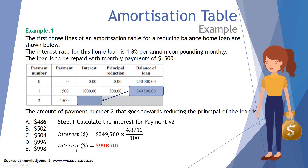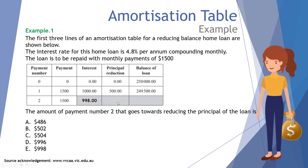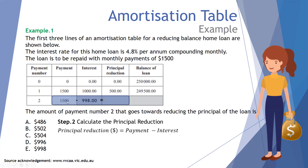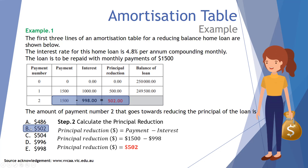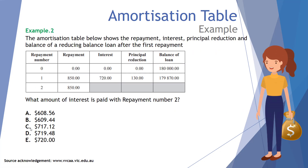We take the previous balance of two hundred and forty nine thousand five hundred dollars and apply the annual rate of 4.8 divided by 12. The interest is nine hundred and ninety eight dollars. That's one of the multiple-choice options, but we haven't found our answer yet — we've only worked out the interest charge. Step two: calculate the principal reduction, which is the payment of fifteen hundred minus the interest of nine hundred and ninety eight, giving five hundred and two dollars, which is option B.